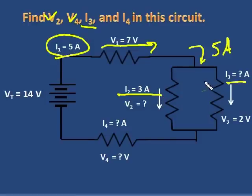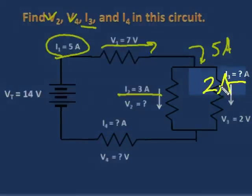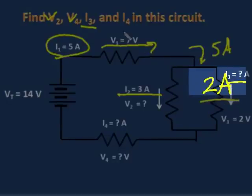obviously, two amps goes through that arm, because three plus two is five. Five comes in. Five is now through those two arms.